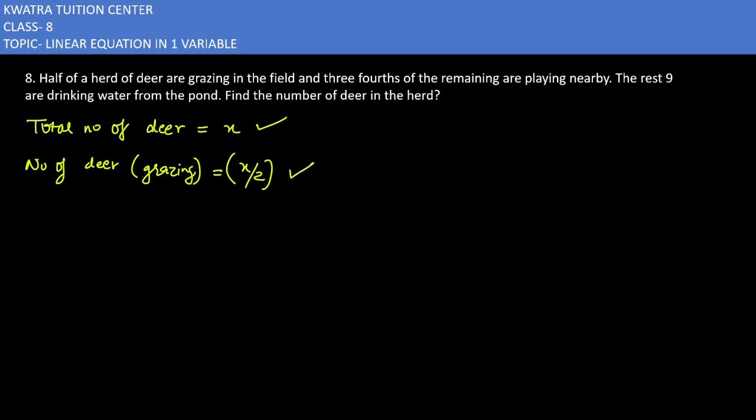Now, I have to think about this because I have said that three-fourths of the remaining are playing nearby. If x is total and the grazing is x by two, remaining is how much it should be? The remaining deer would be x minus x by two. So it would be 2x minus x over two.